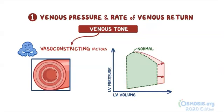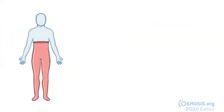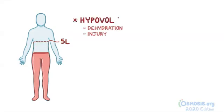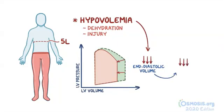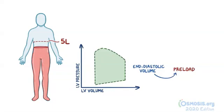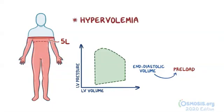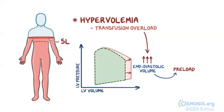Circulating blood volume also influences venous pressure and venous return. An average adult has about 5 liters of circulating blood. Hypovolemia — decreased blood volume due to dehydration or blood loss — leads to decreased end-diastolic volume and therefore decreased preload. Conversely, hypervolemia or fluid overload, such as from excessive intravenous fluid administration, results in increased end-diastolic volume and therefore increased preload.